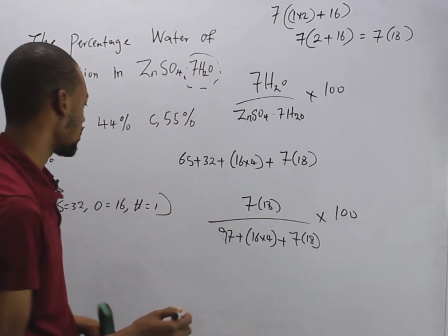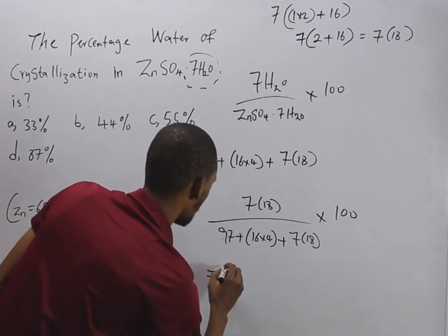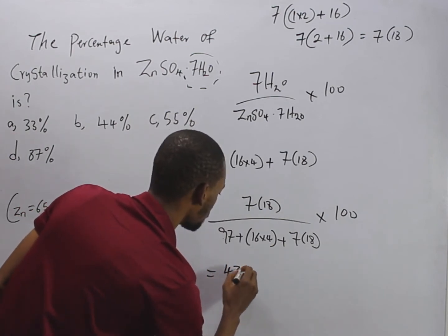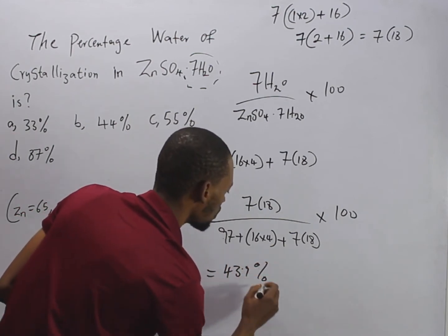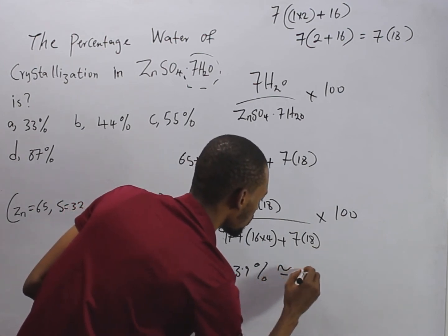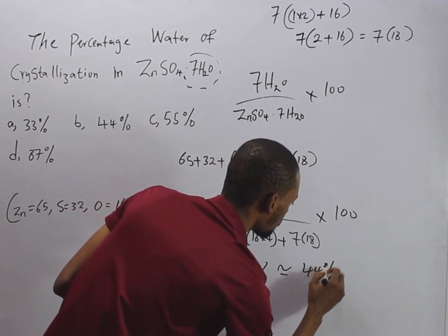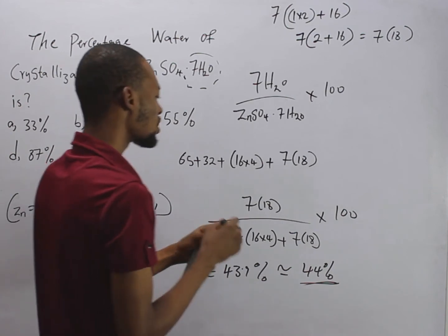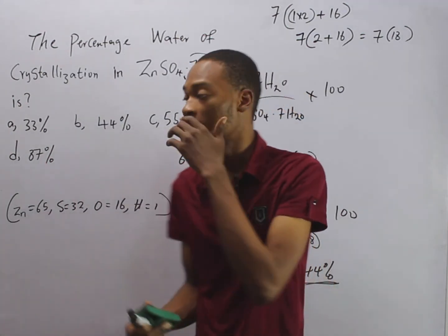So solving this, you should get 43.9%, which is approximately equal to 44%. So that is the percentage of water of crystallization in this compound.